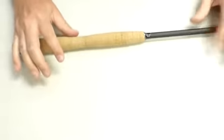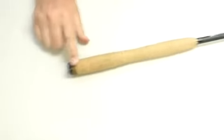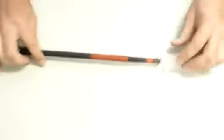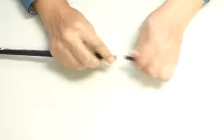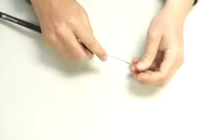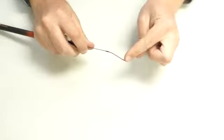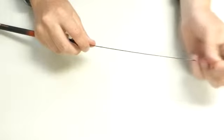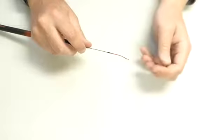When you first get your tenkara rod, you're going to remove the plastic from the handle. The first thing you're going to do if you're using our furrowed lines is put a stopper knot in the end of the lilian on the tip piece of your tenkara rod.